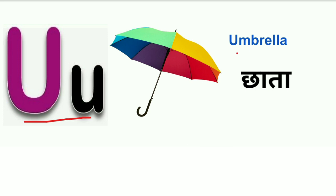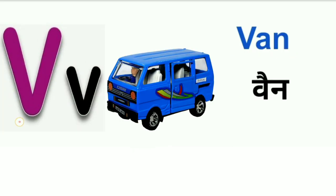U for umbrella. Umbrella means chata. V for van. Van means chhoti gaadi.